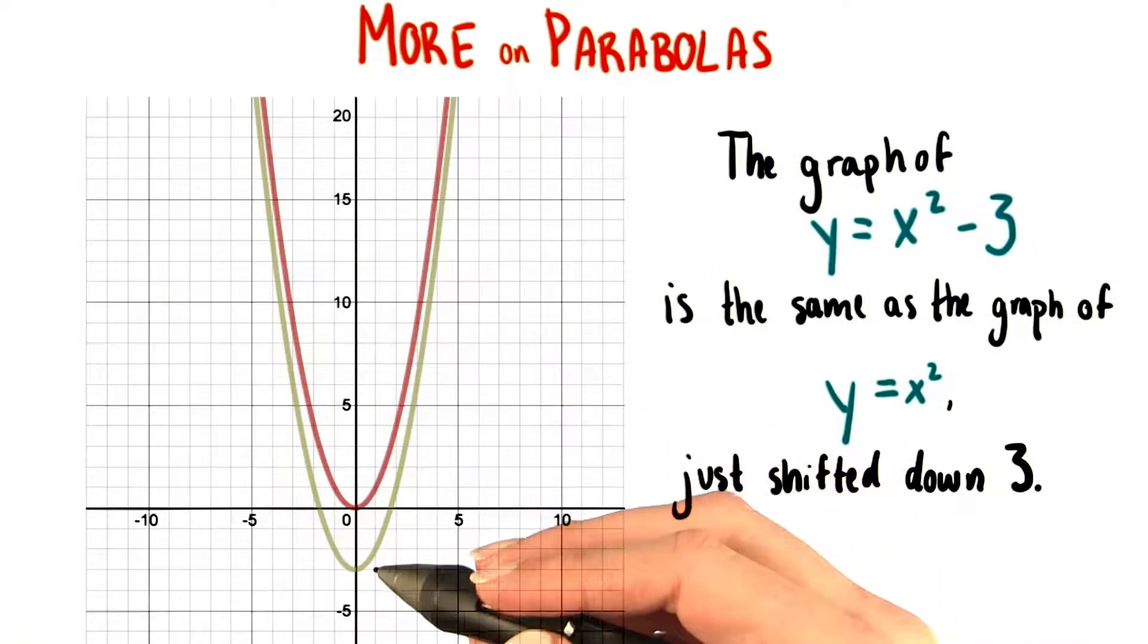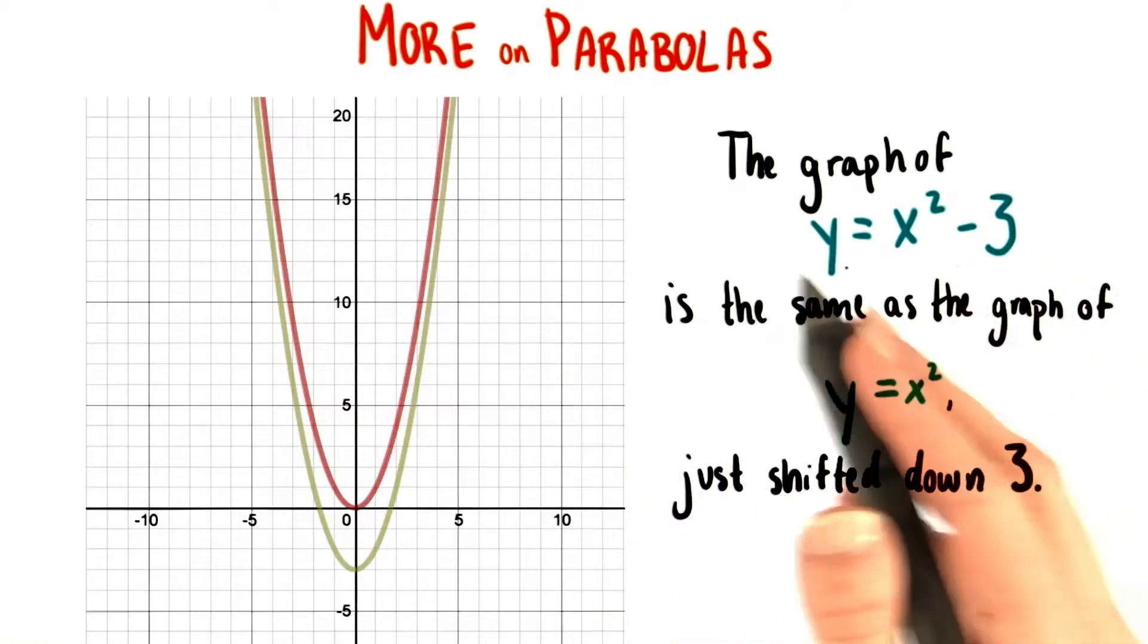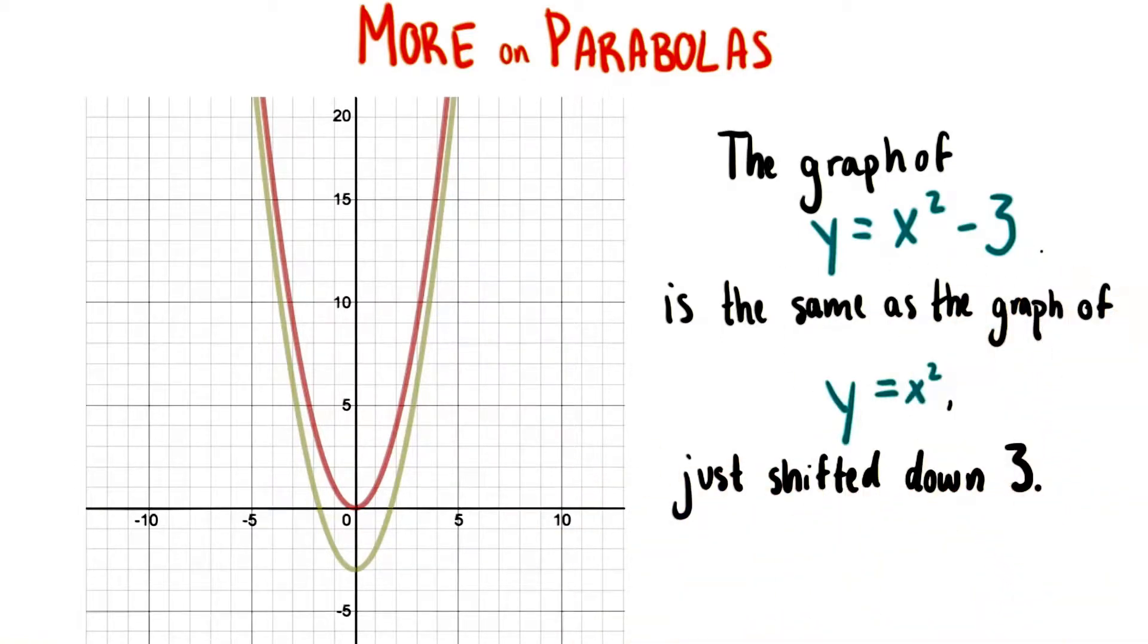We can see that these curves are actually identical. The only difference comes from the presence of this minus 3 in the equation y equals x squared minus 3. This shifts the graph down 3 units.